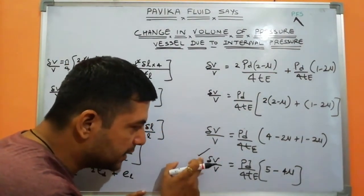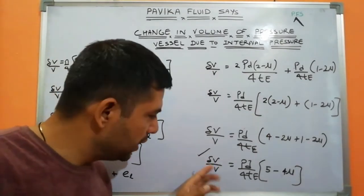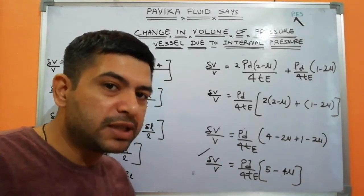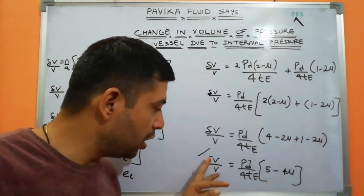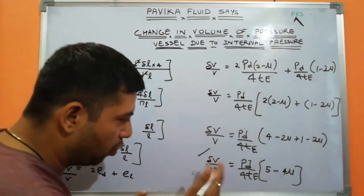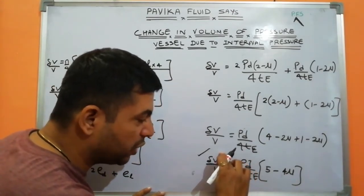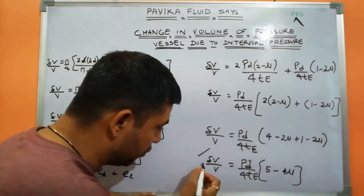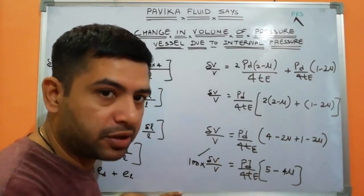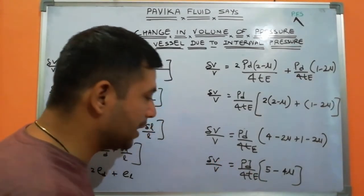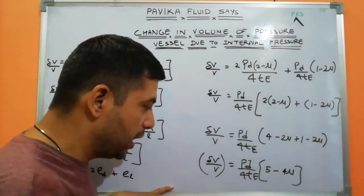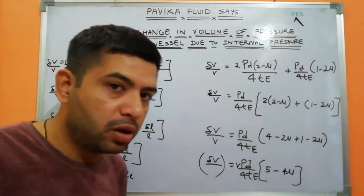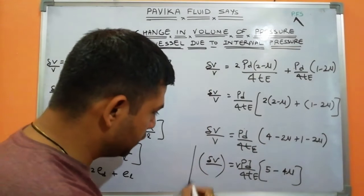This expression δV/V = pd(5 − 4μ)/(4tE) is called the volumetric strain — the change in volume upon original volume, or the fraction of the original volume that has changed. If you want the actual change in volume δV, multiply both sides by V: δV = V · pd(5 − 4μ)/(4tE).